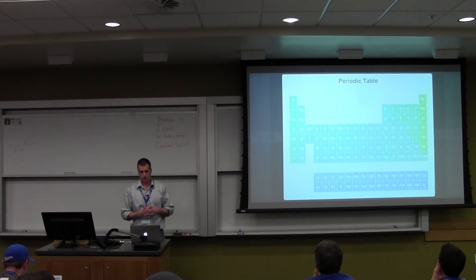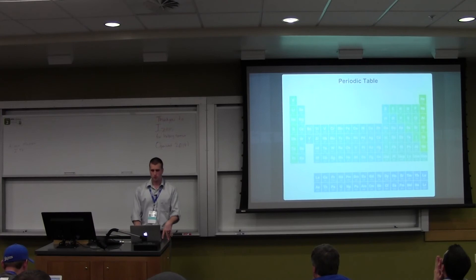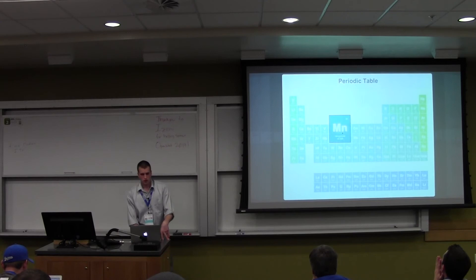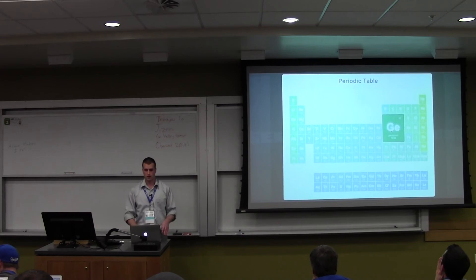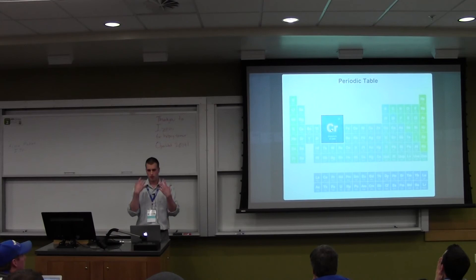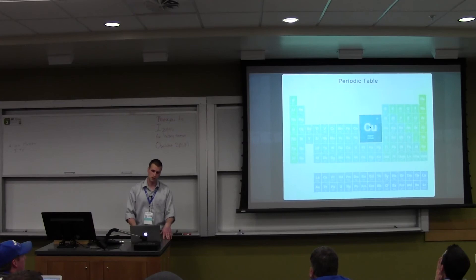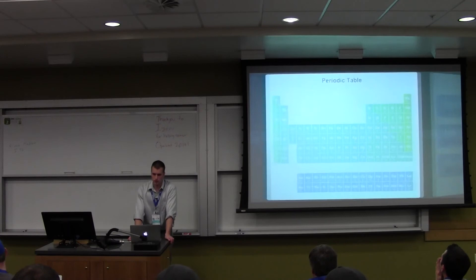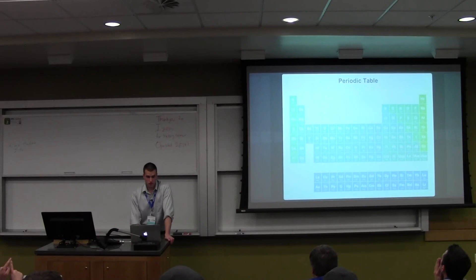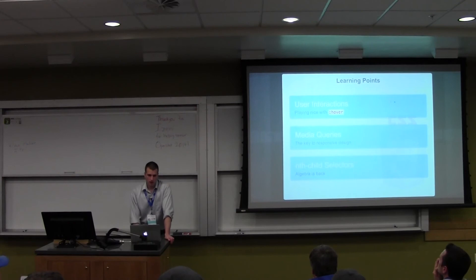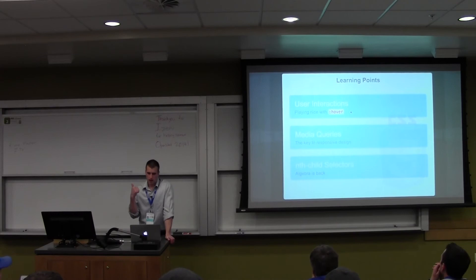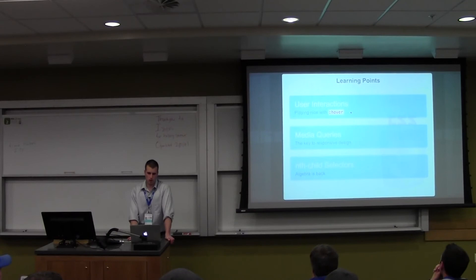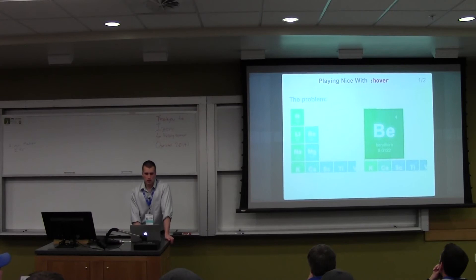For our last example, we want to create a really cool pseudo-interactive periodic table — doing all of this with CSS: having the colors applied to the correct element groups, and having them get bigger and go away with CSS. We're going to talk about playing nice with hover, media queries, and nth-child selectors. This is probably the most contrived of all my examples, but it's still fun.